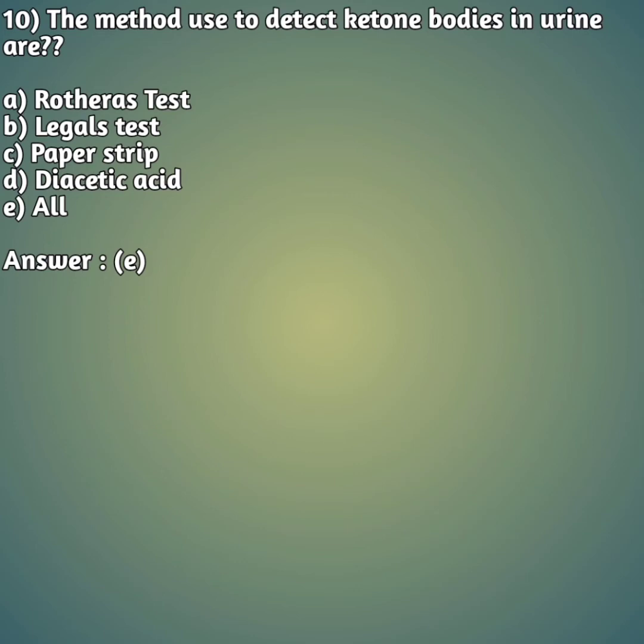Tenth question: the methods used to detect ketone bodies in urine are — option A: Rothera's test, option B: Legal's test, option C: paper strip, option D: diacetic acid, option E: all. The right answer is all.